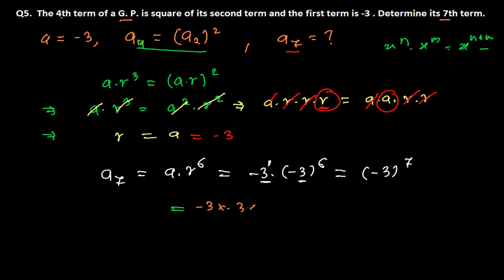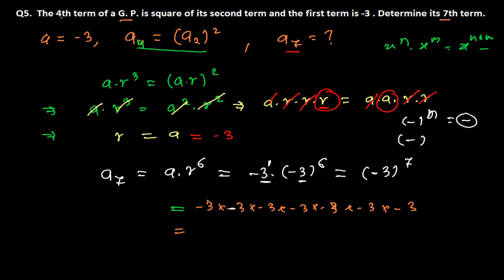So we need minus 3 to the power 7, meaning we multiply minus 3 seven times. Regarding the negative sign: since minus has an odd power, the result will be negative. If minus has an even power the result is positive, but here the power is odd, so the final answer will be negative.